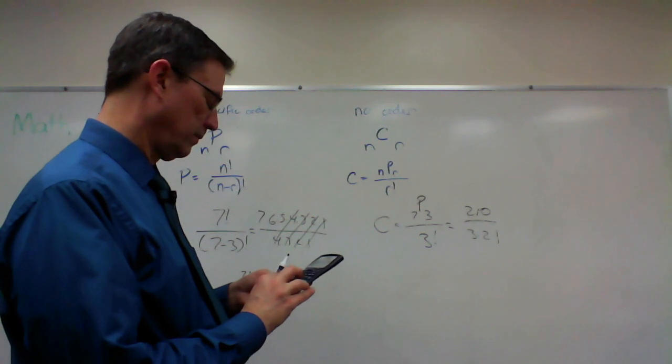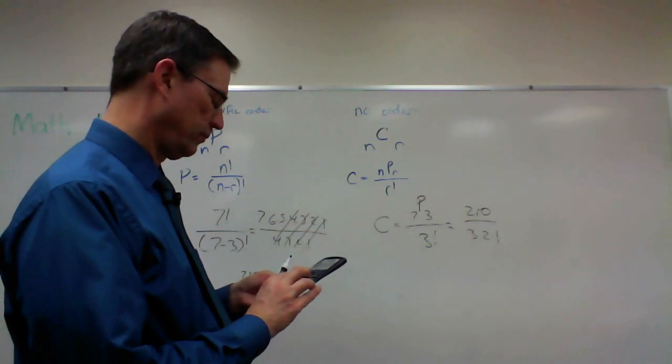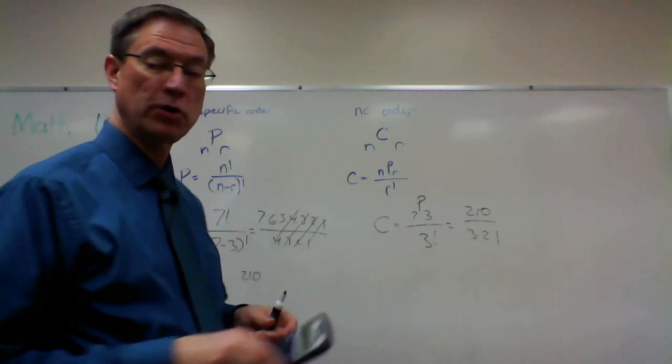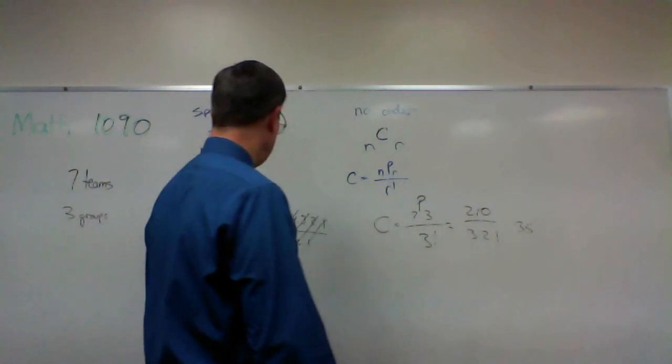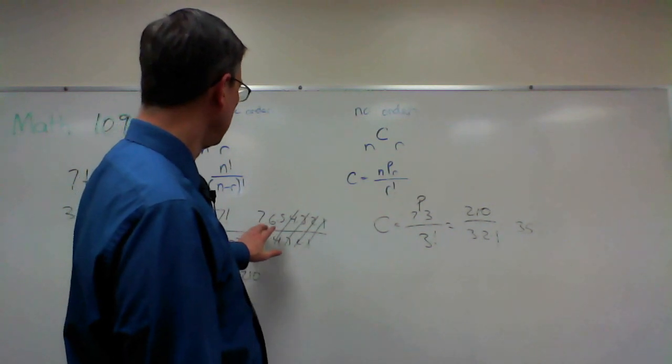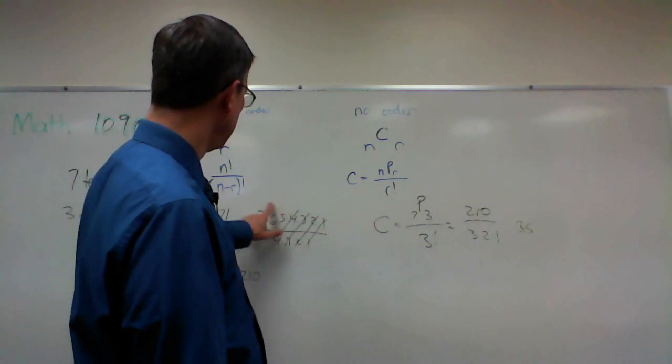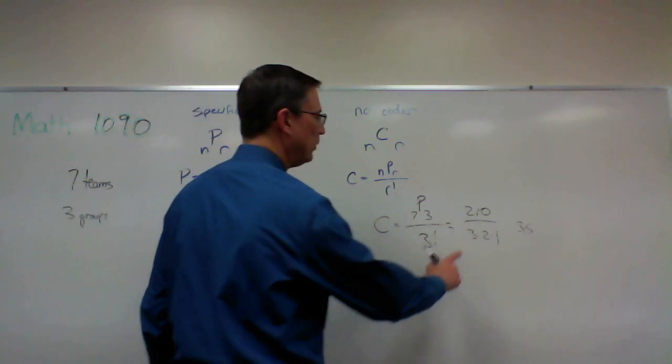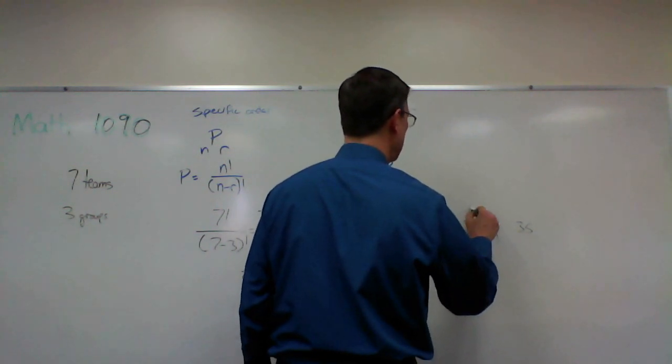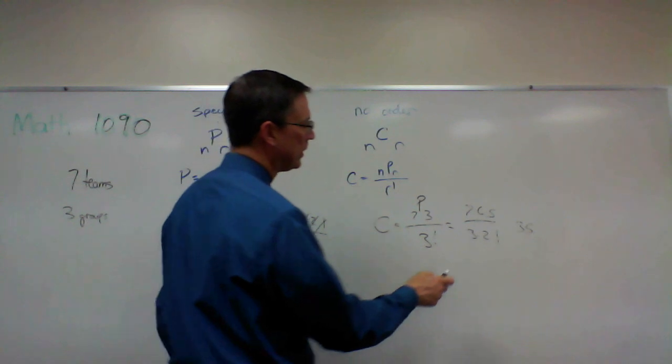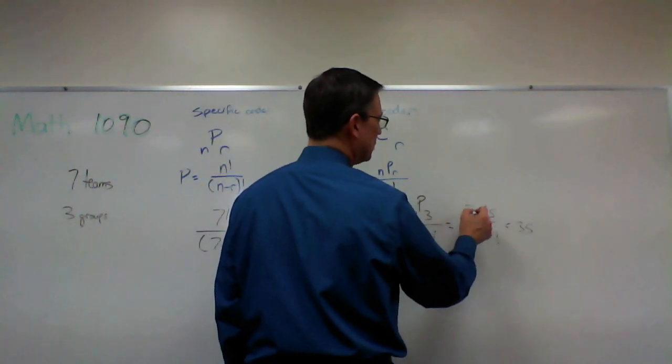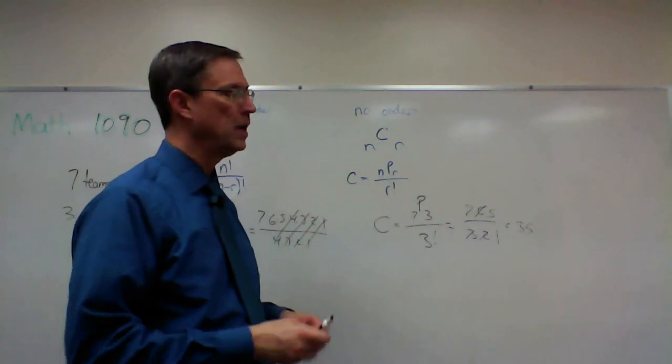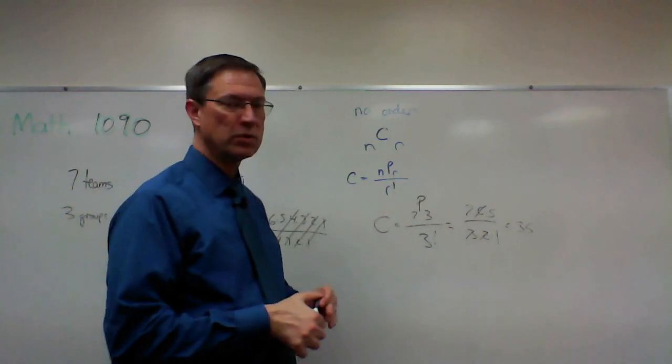Whoops, did that wrong. Is 35. I could have also taken just this part here—that's 7, 6, 5—rather than write 210, I could have said okay, that's 7 times 6 times 5 because everything else canceled out. And then I could see that 3 times 2 is 6, and so 7 times 5 is 35.